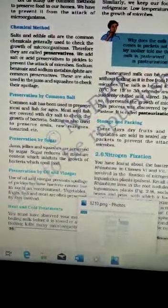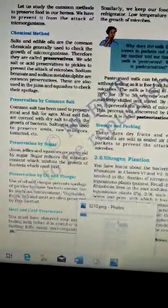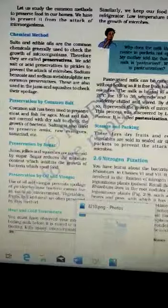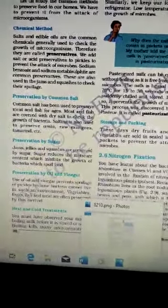The next method is preservation by sugar. Jams, jelly and squashes are preserved by sugar. Sugar reduces the moisture content which inhibits the growth of bacteria which spoil food.